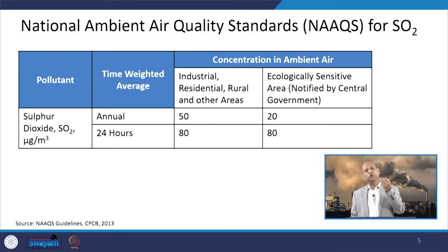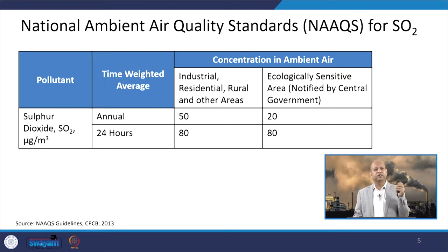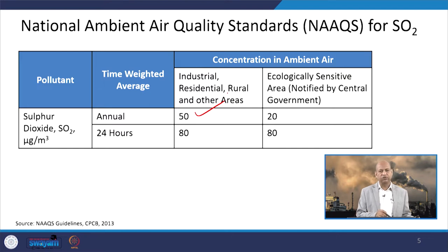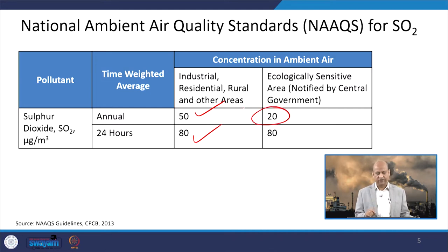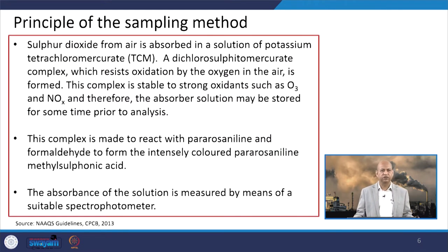Looking at the prescribed standards: for industrial, residential, or rural areas the annual standard is 50 micrograms per cubic meter and 24-hour standard is 80. But for ecologically sensitive areas the annual average is only 20 — very stringent — and the 24-hour standard remains 80 micrograms per cubic meter.